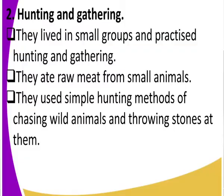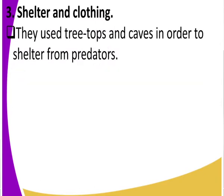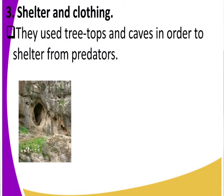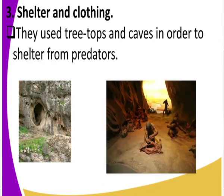For shelter, early man used treetops and caves in order to shelter from predators. A cave is that hollow thing in a rock. Looking at the image, the first image shows the entrance to a cave, and the second image shows the cave itself — you can see people inside. That is early man during the Old Stone Age.